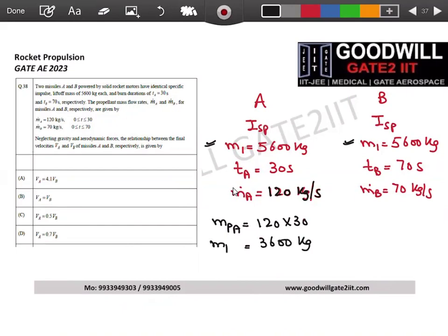You are burning 3600 kg of propellant in rocket A or missile A. In B you are burning 70 kg every second and you are burning it for 70 seconds, that means you are burning 4900 kg of propellant in rocket B or in missile B.